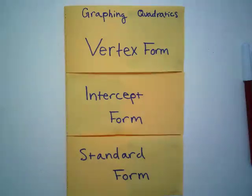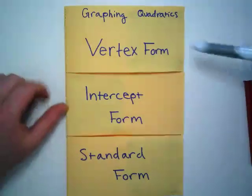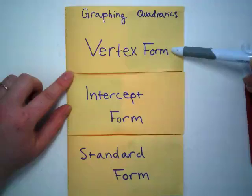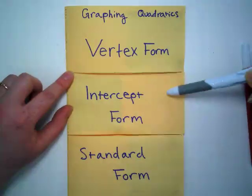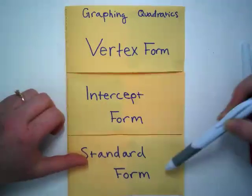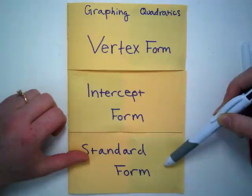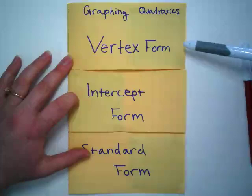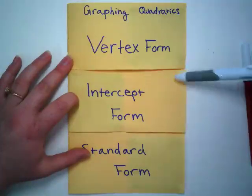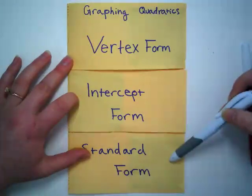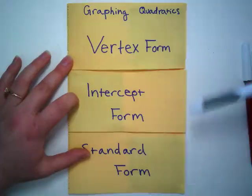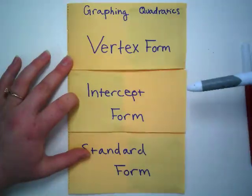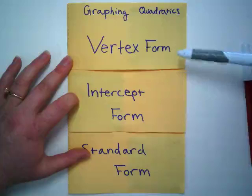Today we are going to be looking at graphing quadratics in three different forms. I have them written here: vertex form, intercept form, and standard form. We're going to look at what the equation looks like for each form and how we can use the information we get from each form to graph our quadratic.